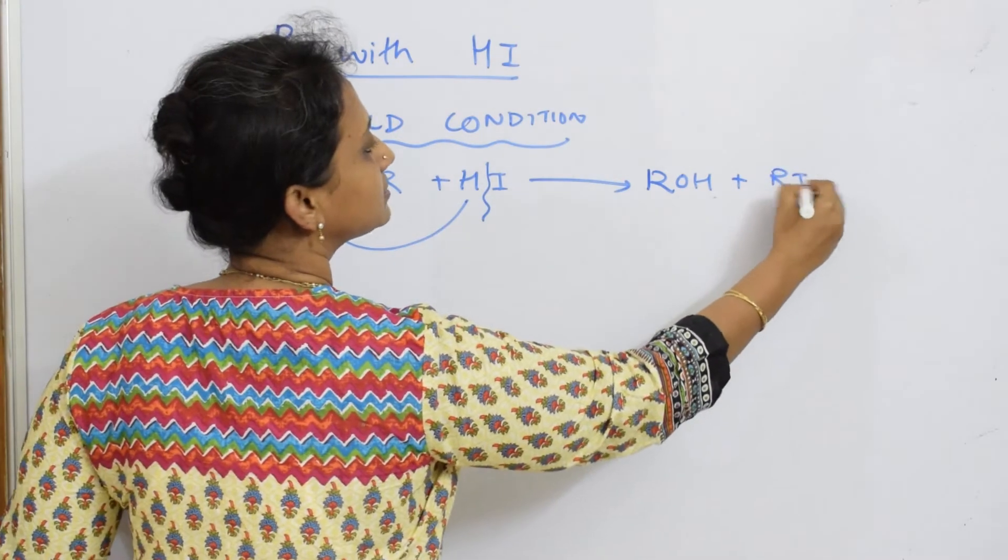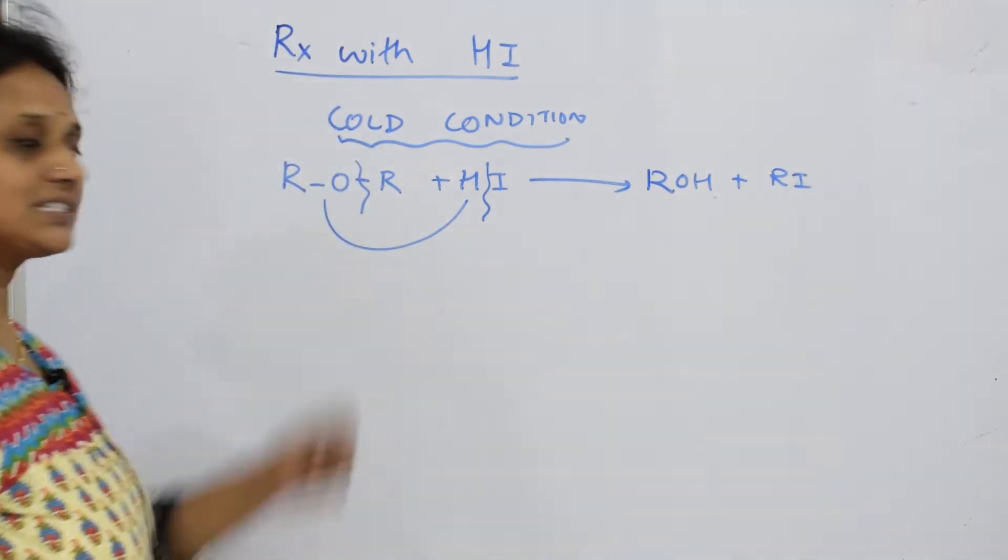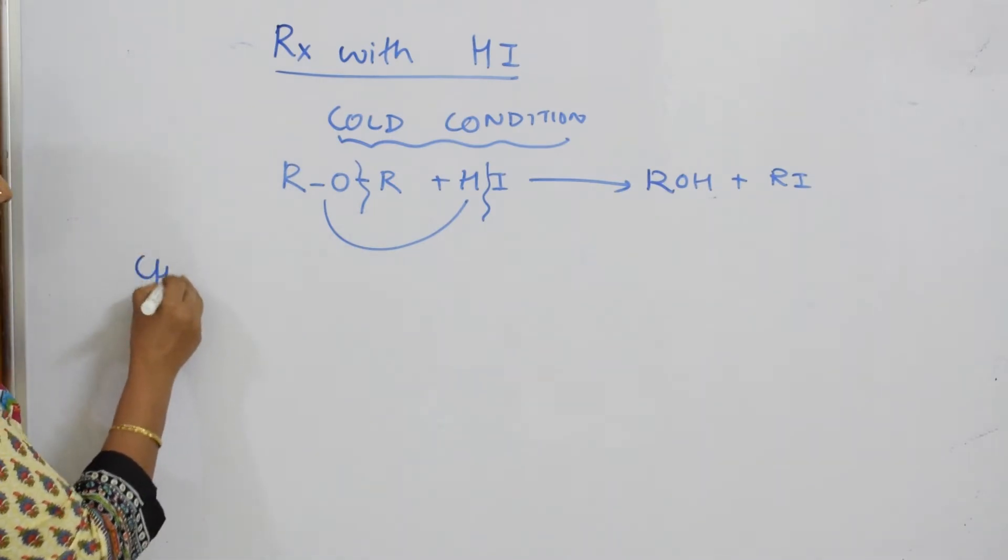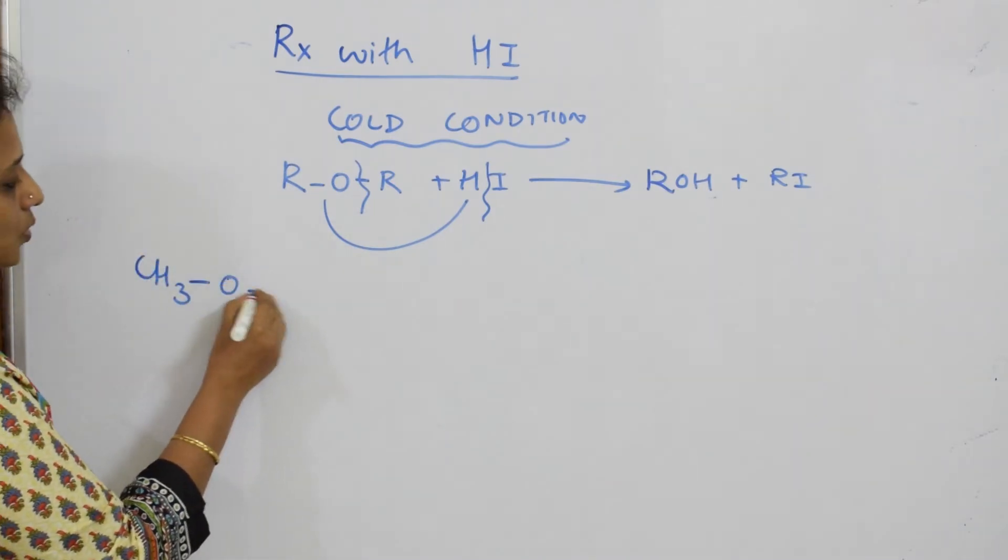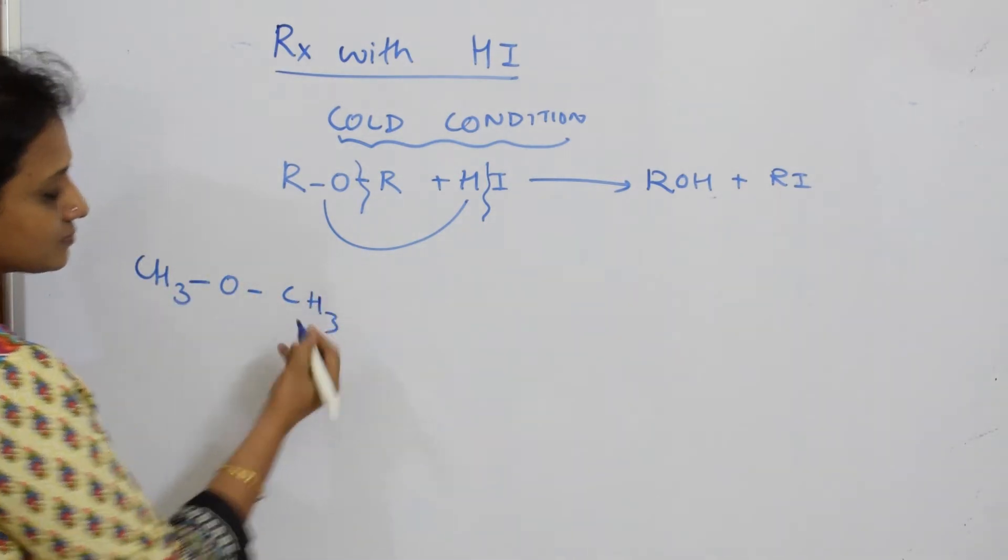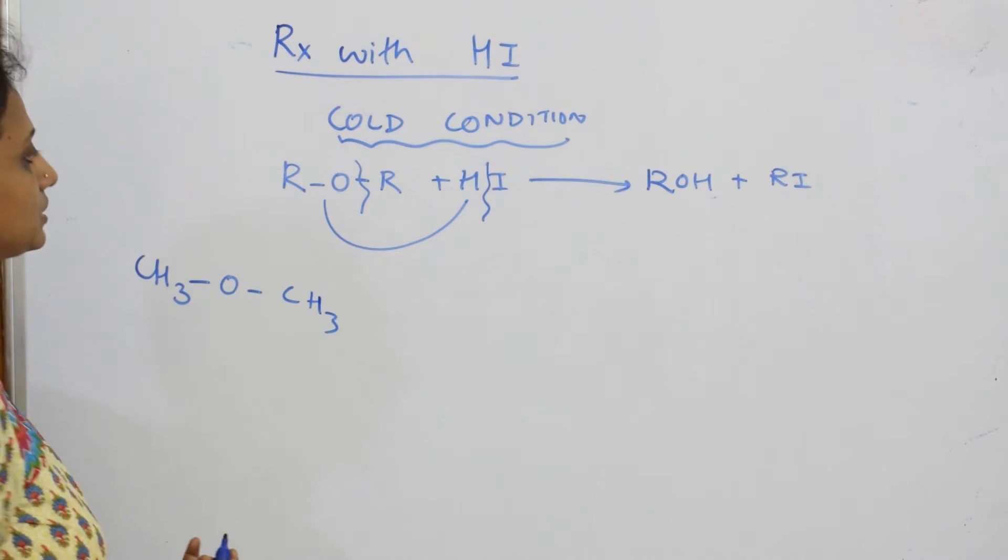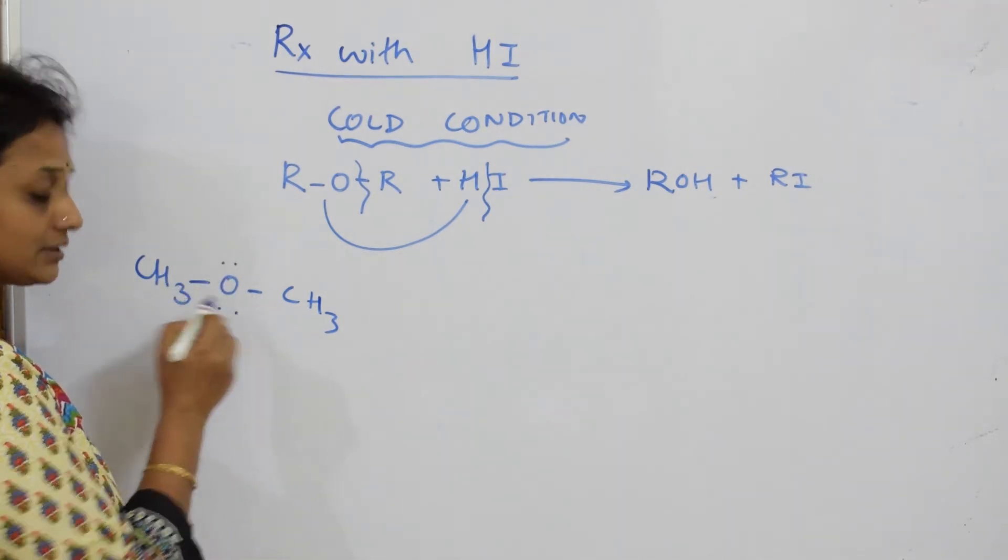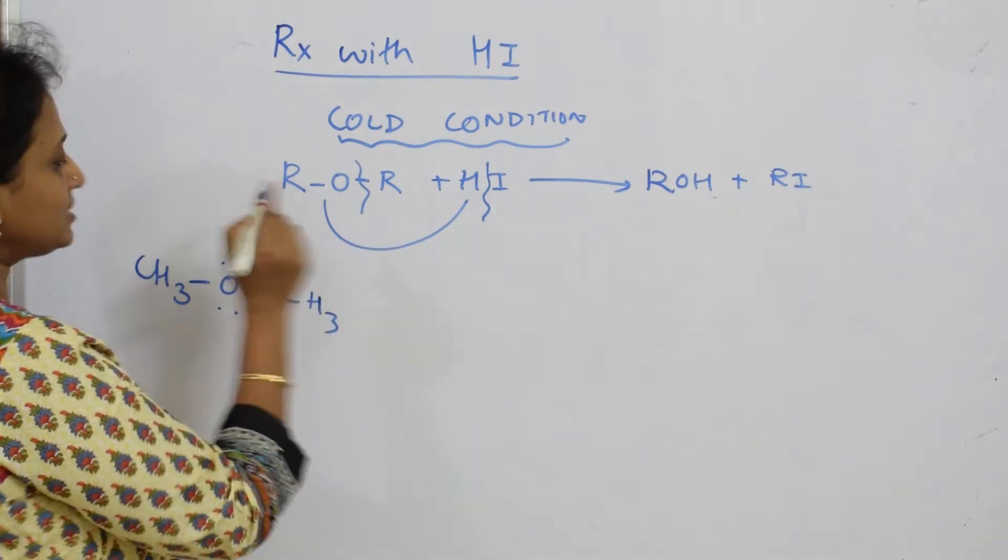Let us see the mechanism for this. Suppose instead of R, I'm going to pick up CH3-O-CH3. Now, in step one, your HI is going to come and attack.